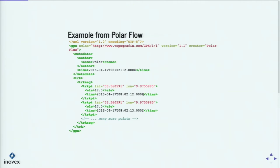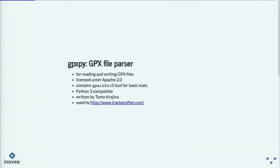So how do we deal with those kinds of files? There's one library called gpxpy. It's a GPX file parser for reading, and you can even write GPX files. It's licensed under Apache 2.0. It contains a nice small command line tool, gpx-info, that gives you some basic stats about your files — like your average velocity. It's Python 3 compatible, which is always important with small libraries. It's written by Tomo Krajina and used on his website, trackprofileapp.com.